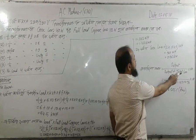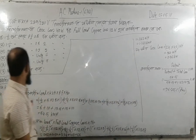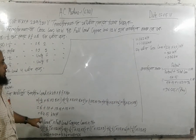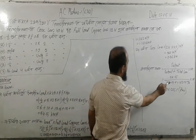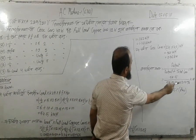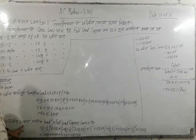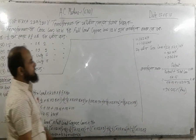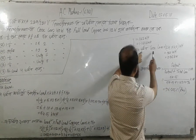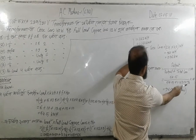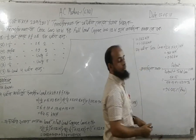Efficiency equals output divided by output plus total losses, multiplied by 100. Output is 54.5, total losses include 24 hours of copper loss at 1.162 and 24 hours of iron loss at 0.96. The final calculation gives efficiency of approximately 96.5%.